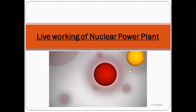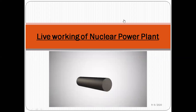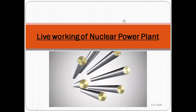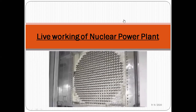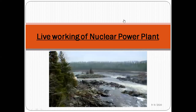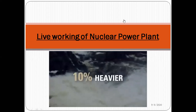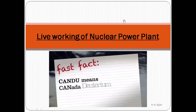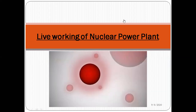Darlington produces electricity using the heat from splitting uranium atoms in a process called nuclear fission. The fuel is naturally occurring uranium processed into small pellets, sealed into metal tubes welded together to form fuel bundles. The fuel bundles are inserted into a large tank called the calandria, which is the heart of the nuclear reactor. In CANDU reactors, a special kind of water called heavy water flows around the fuel bundles. Heavy water is found in all water and is 10% heavier than ordinary water because it incorporates a heavy form of hydrogen called deuterium.